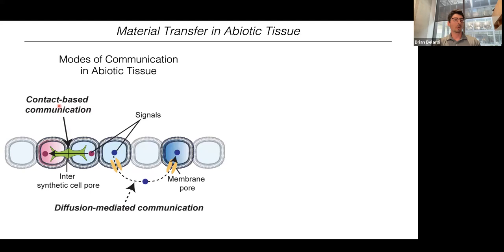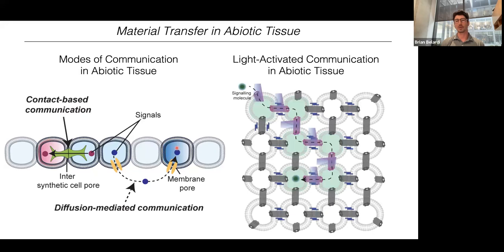In this part of the project, we're first interested in controlling communication between synthetic cells. We want to control the communication of a sender cell to a nearby or more distant cell. If we're able to control communication within synthetic tissue, then we can allow it to undergo coordinated actions over large length scales and long time scales. We can broadly categorize communication within synthetic tissue into two categories: contact-based communication, where a signal passes from one synthetic cell directly to another in contact with it, or paracrine-like signaling where a synthetic cell releases a signal into the extracellular space and it's taken up through a membrane pore into a more distant cell.